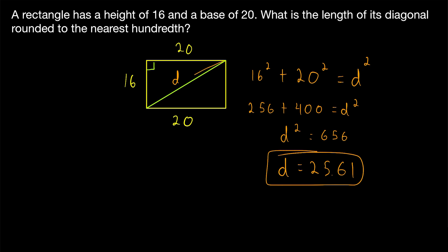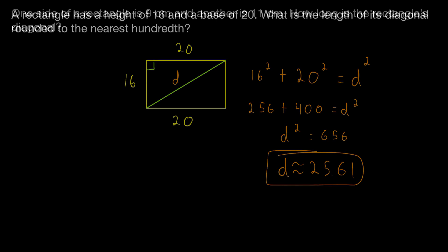The diagonal length of our rectangle rounded to the nearest hundredth is 25.61. Instead of equals, you might write approximately: D is approximately 25.61.